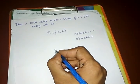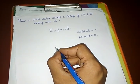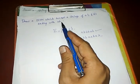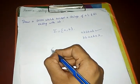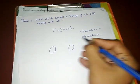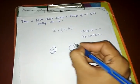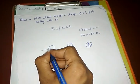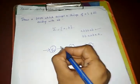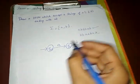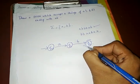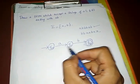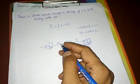Usually, the number of states is one more than the length of the alphabet condition. Here the condition is 'ending with b', which has length two, so there will be three states: Q0, Q1, and Q2. Q0 is the start state. On receiving input a or b, the machine should accept when b is encountered last, so Q2 is the accepting state.